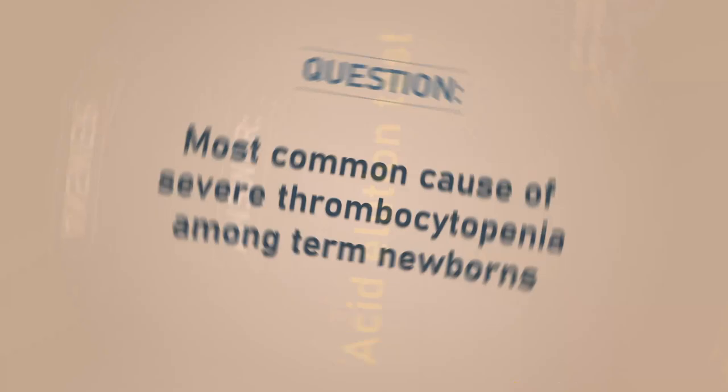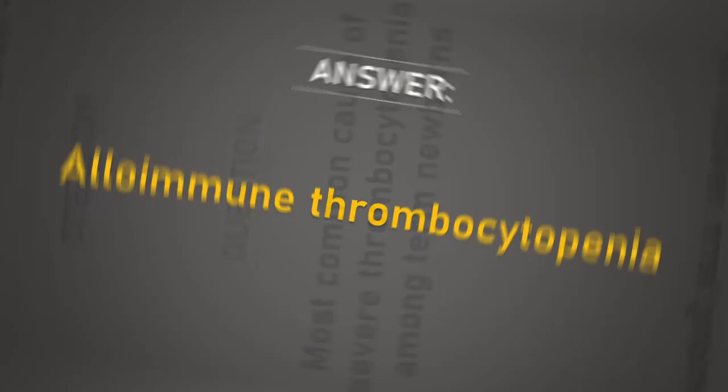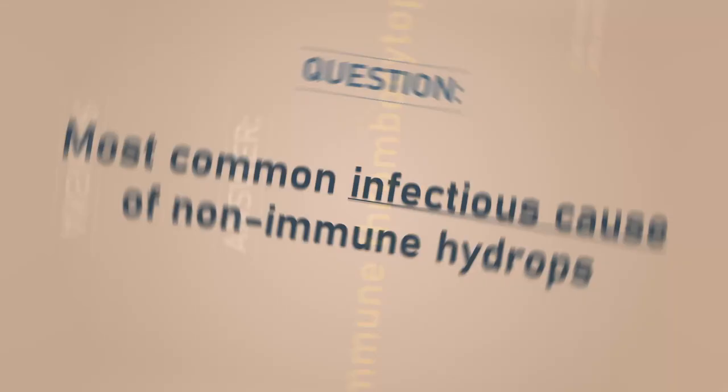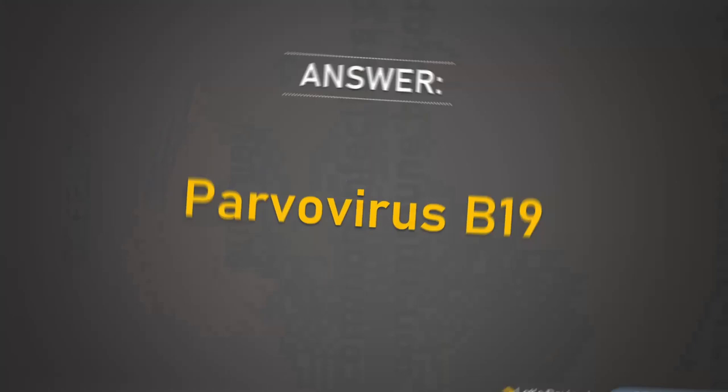Most common cause of severe thrombocytopenia among term newborns: alloimmune thrombocytopenia. Most common infectious cause of non-immune hydrops: parvovirus B19.